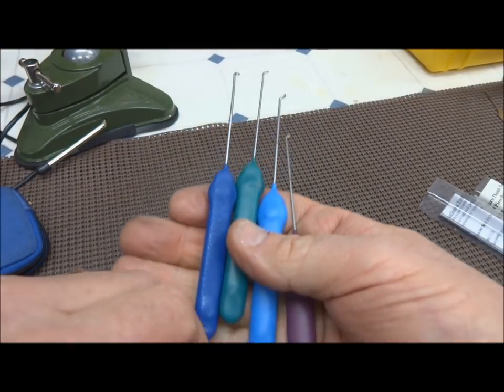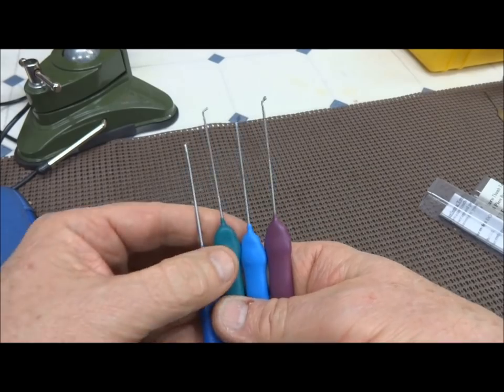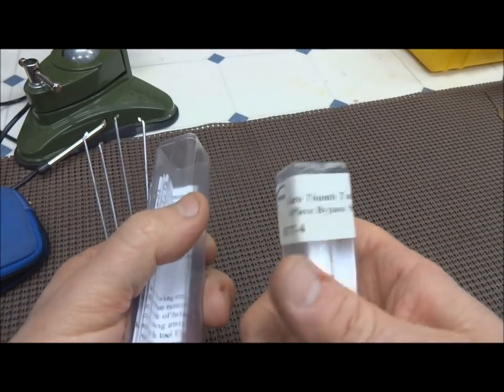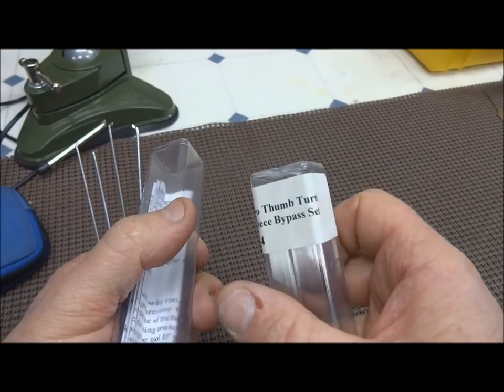There are several manufacturers. This is just one. This is the Peterson kit, and he calls it the Euro thumb turn four piece bypass set.